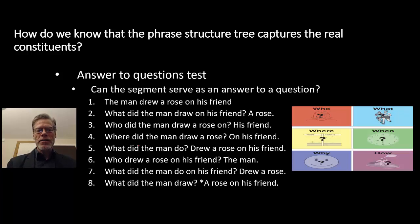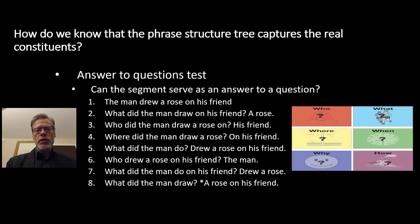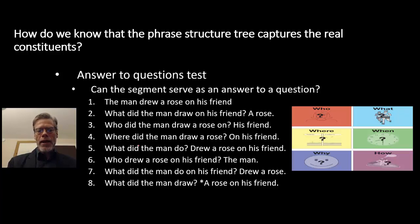Our next test is the answer to questions test. We ask who, what, where, when, why-type questions to see if we can isolate one part of the original sentence as an answer — if it can stand alone, it's got to be a constituent. Starting with 'the man drew a rose on his friend': What did the man draw on his friend? A rose. Who did the man draw a rose on? His friend. Where did the man draw a rose? On his friend. What did the man do? Drew a rose on his friend. Who drew a rose on his friend? The man. What did the man do on his friend? Drew a rose. What did the man draw? A rose on his friend — but that last one only works in the picture-drawing interpretation, not the tattooing interpretation.